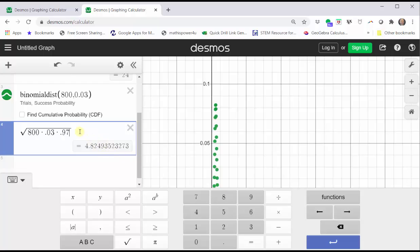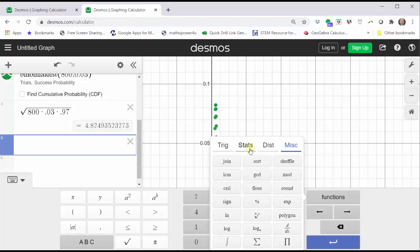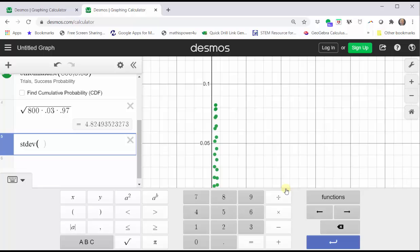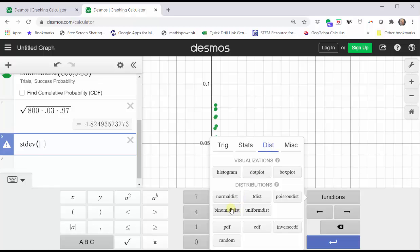Let's also find the standard deviation using the Desmos functions. Let's click in cell five. Click functions. Click stats. Click STDEV for standard deviation. Go back to functions. Distribution. Binomial distribution.